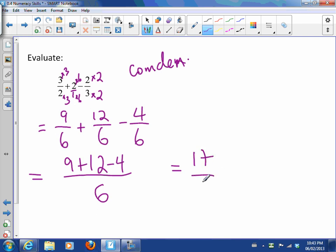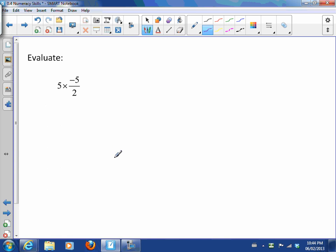Which is 9 plus 12 is 21 minus 4 is 17 over 6. If you want to leave this answer like this, that's fine, or I'm okay with you putting it into a mixed number, which is how many times does 6 go into 17? Goes twice, and the remainder is 5, because 6 times 2 is 12 and there's 5/6 left over. So you have to understand that this and this is the same thing, they just look a little bit different.